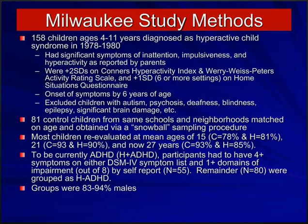We also required that individuals be impaired in at least one or more domains of major life activities out of eight domains examined. Using these criteria, we split the hyperactive sample into those who met criteria for ADHD at follow-up — labeled H+ADHD, hyperactive in childhood and meeting modified DSM-IV criteria at age 27 — and those who did not, labeled H-ADHD. Some of these children were placing within the normal range, suggesting they had recovered from ADHD, while many others remained symptomatic but didn't meet all diagnostic criteria.